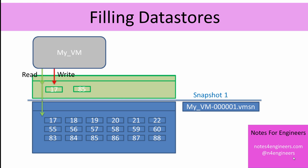How are we going to fill up the data stores with a snapshot? Well, there are two things. The first is that the moment we take the snapshot, a VMSN file is created. This file holds the entire RAM contents for the virtual machine. So if the virtual machine has 4GB of RAM, the VMSN file is 4GB in size. On the other hand, if the virtual machine has 64GB of RAM, then it's a 64GB VMSN file. Better have budgeted that in your free space.